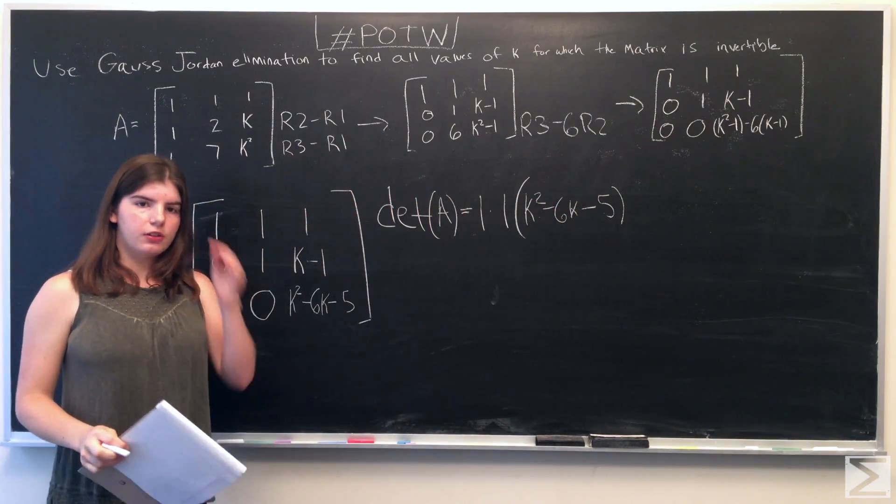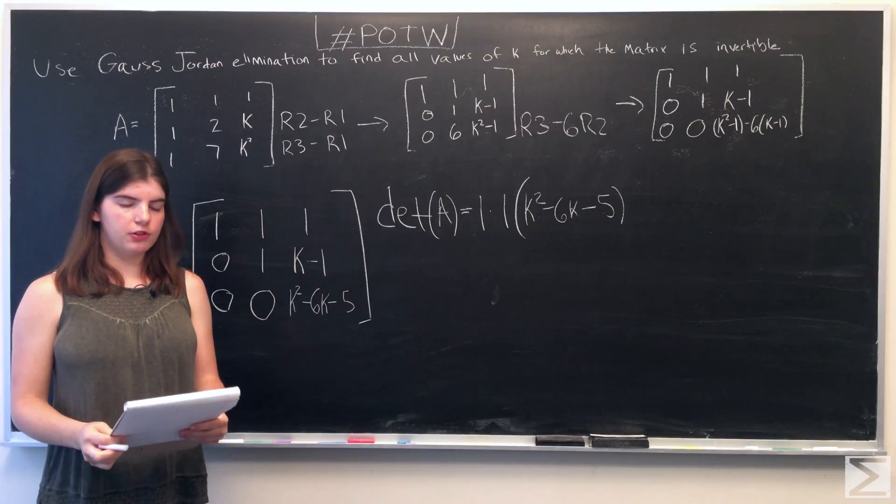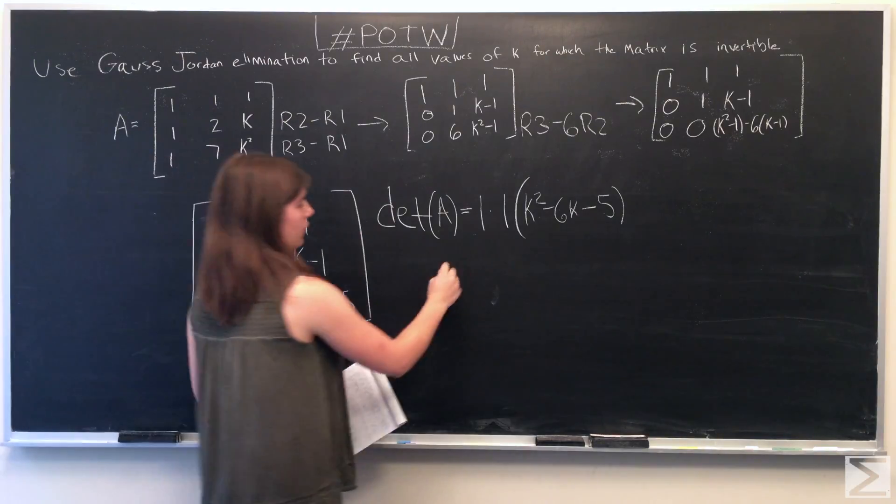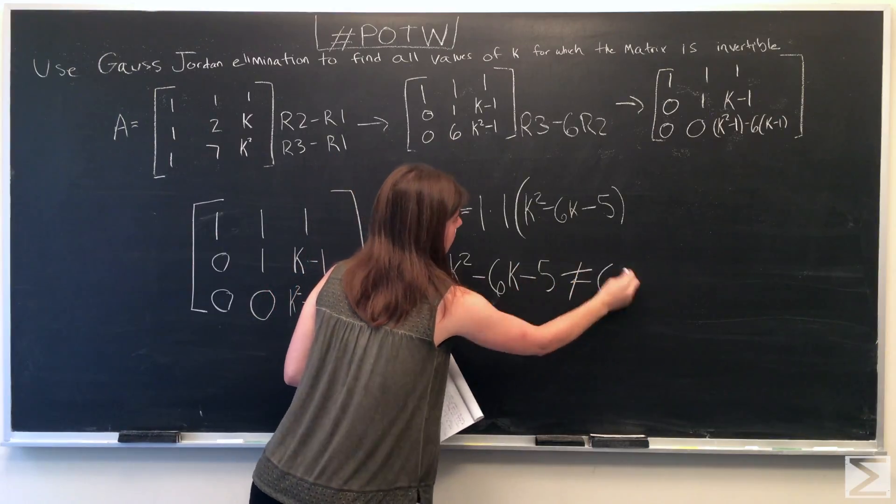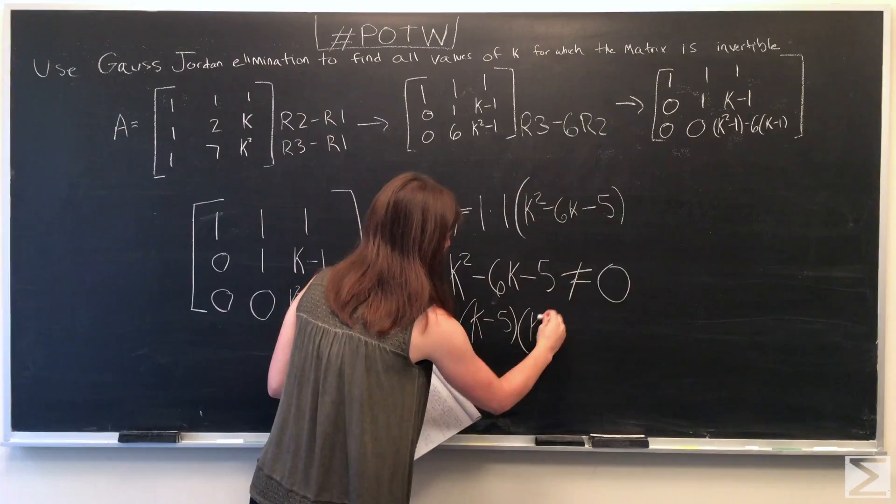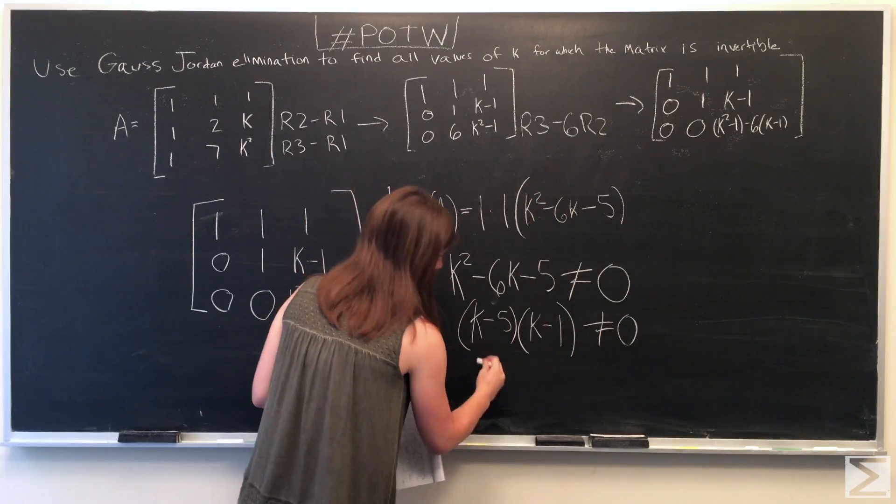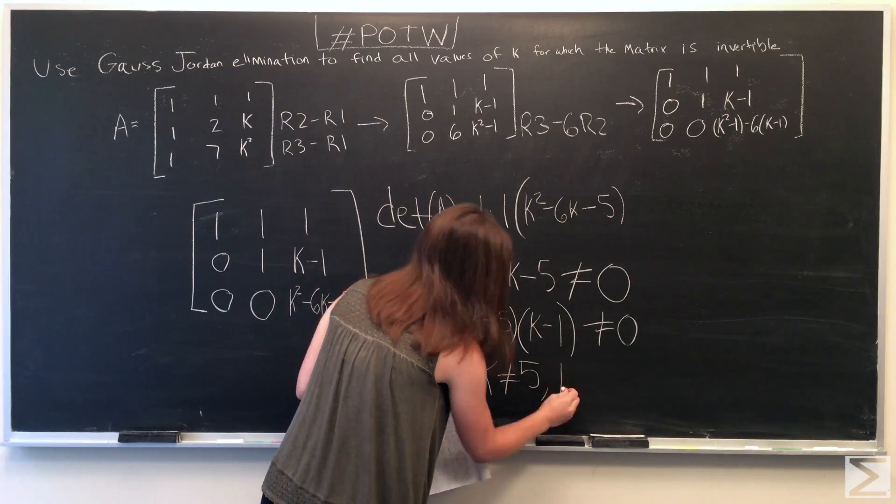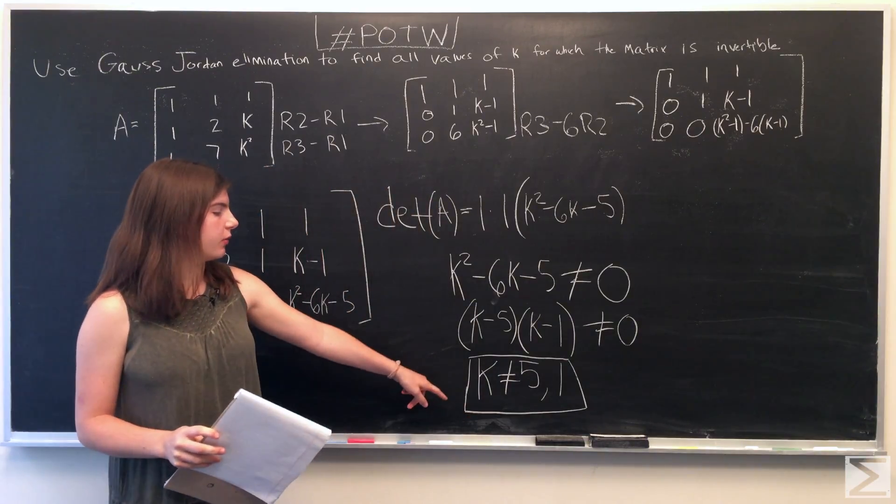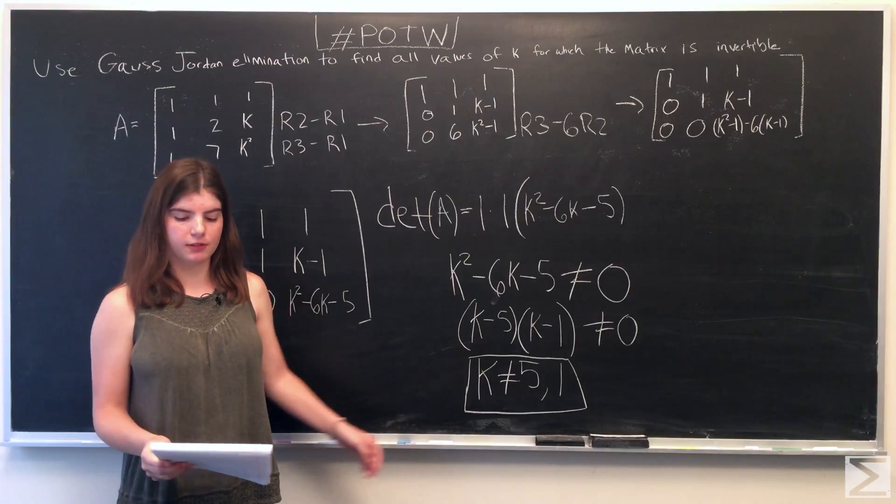And for the matrix to be invertible, the determinant cannot be equal to zero. And we can factor this. The matrix A is invertible for all values of k that are not 5 and not 1.